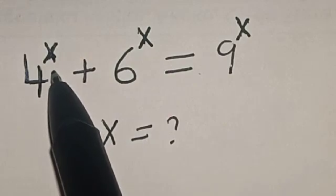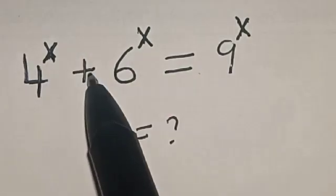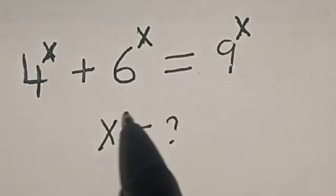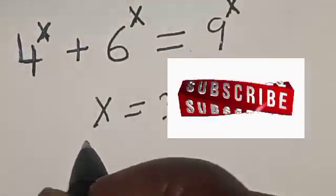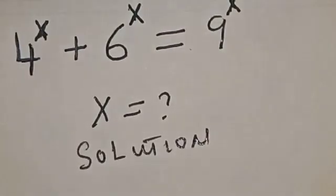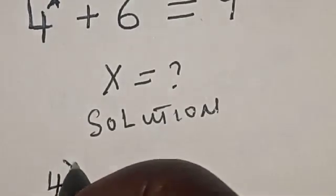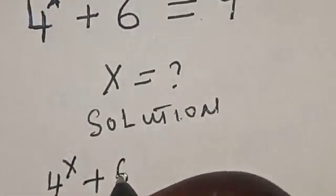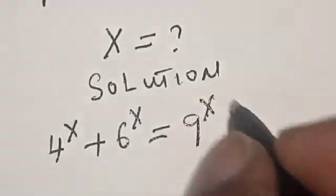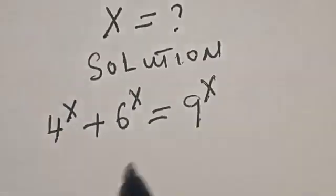Welcome to Math Gist. In this class we want to find the value of s from this given equation: 4 raised to power s plus 6 raised to power s is equal to 9 raised to power s. This is 4 raised to power s, 6 raised to power s, and 9 raised to power s.